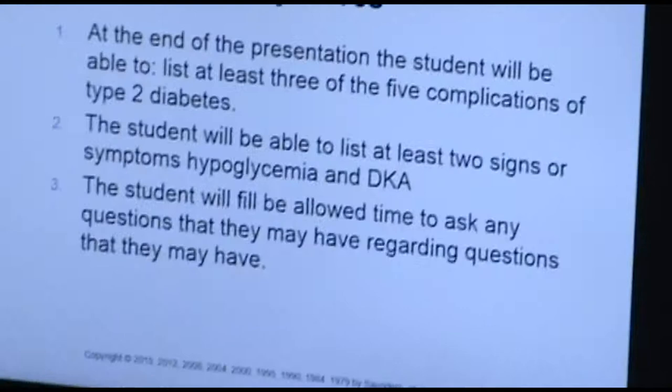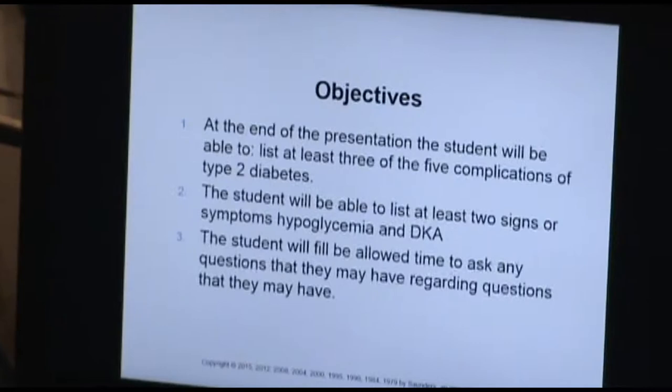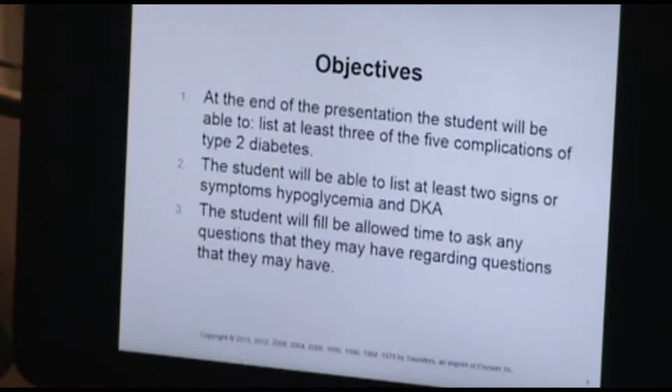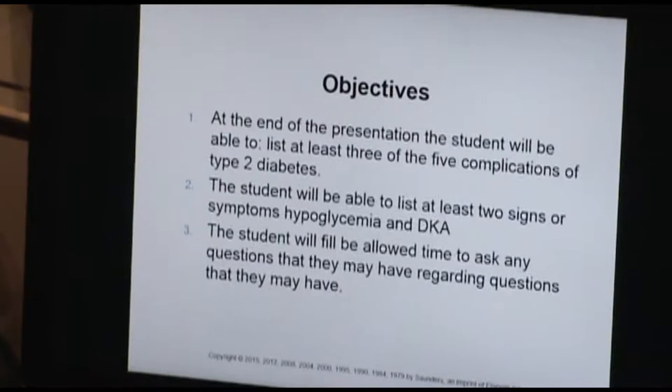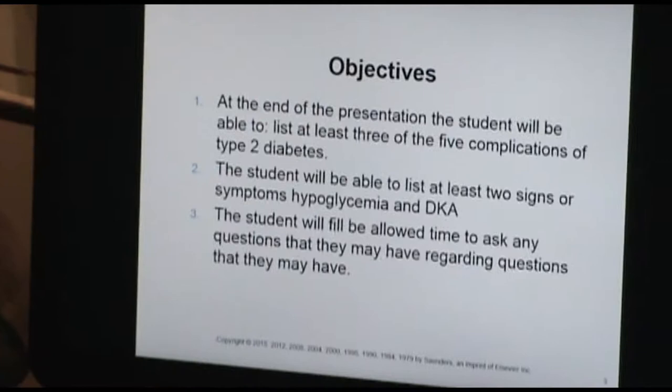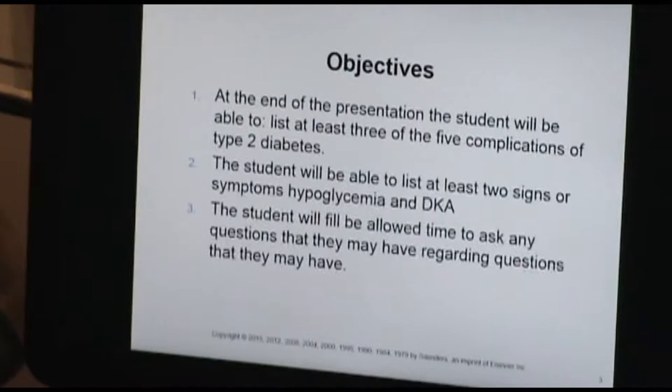First objective: at the end of this presentation, students will be able to list at least three of the five complications of type 2 diabetes that we're going to be talking about. The second objective is that students will be able to list at least two signs and symptoms of hypoglycemia and DKA. The third is that students will be allowed time to ask questions. We'll talk about five complications — we'll just scratch the surface, as it's a very in-depth topic.